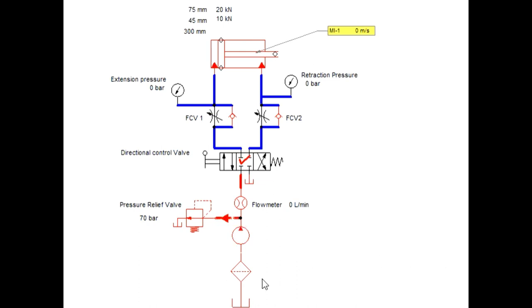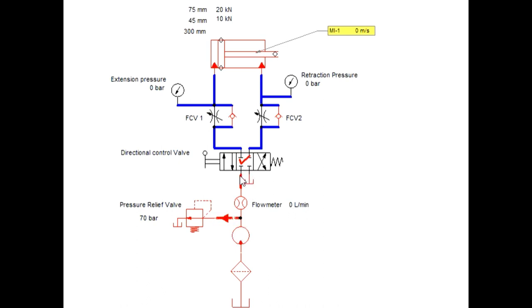In the simulation, at the bottom the reservoir is connected, followed by the filter, pump, pressure relief valve, flow control valve, direction control valve, another flow control valve, and the actuator with the given specification and loads. Extension and retraction pressure gauges are present, and a flow meter measures the flow rate from the pump. Currently the center position is actuated so there is no extension or retraction of the actuator.